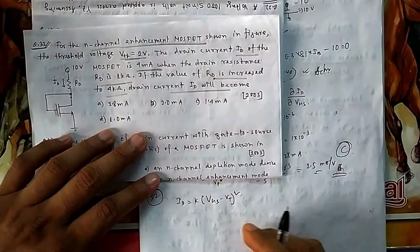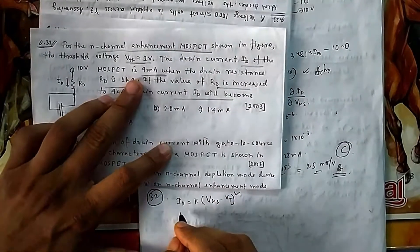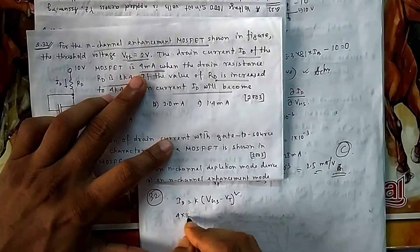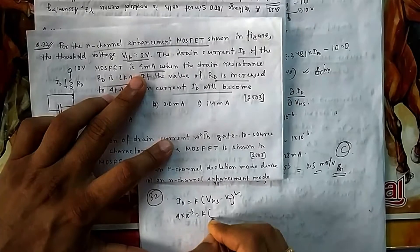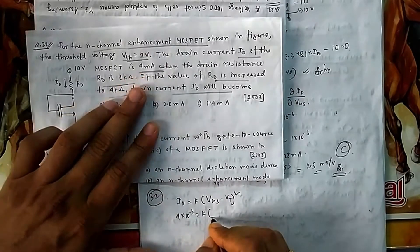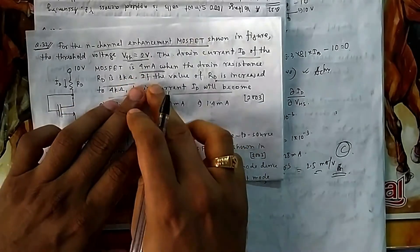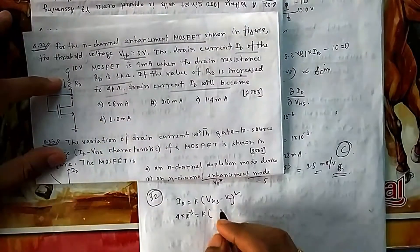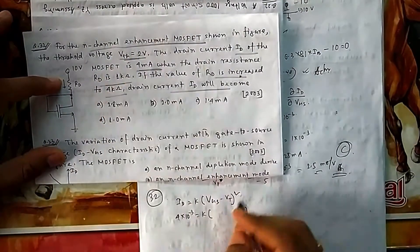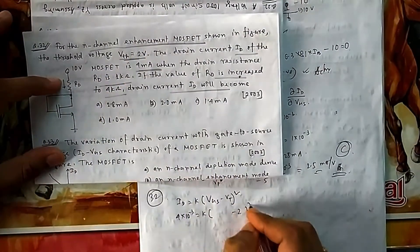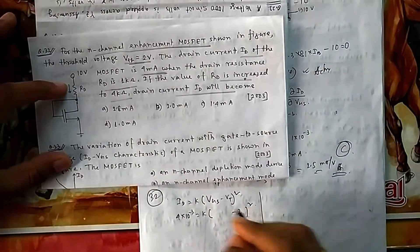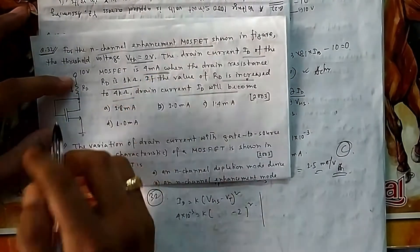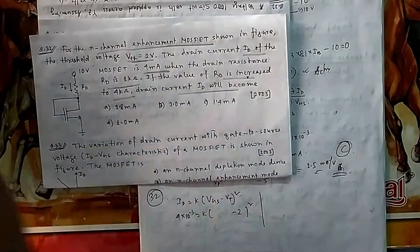Given I_D = 4 mA and V_T = 2 V, we need to find V_GS. Taking a KVL along the path from supply to gate to source: −10 + I_D × R_D + V_GS = 0, so V_GS = 10 − I_D × R_D.